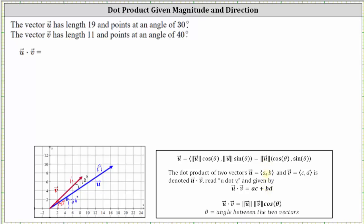Let's first determine the dot product using the angle between the two vectors. Vector u dotted with vector v is equal to the magnitude of vector u, which is 19, times the magnitude of vector v, which is 11, times cosine theta, where theta is the angle between the two vectors, which is 10 degrees.